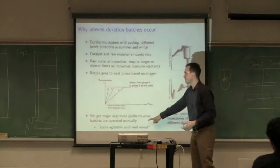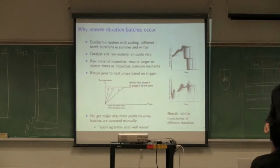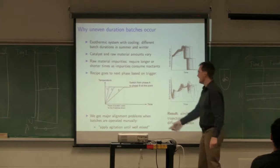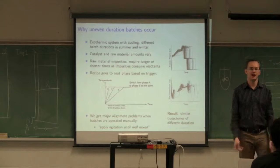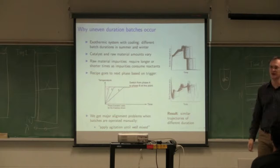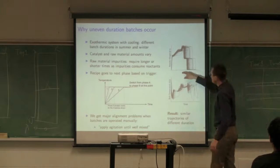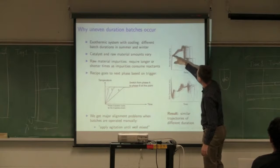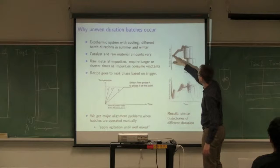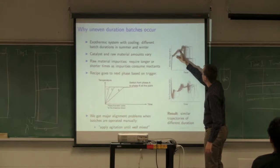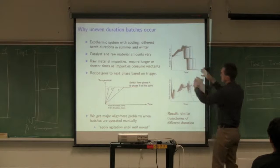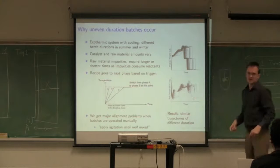When operators charge catalysts and raw materials to these units, they're never perfect. So those raw material amounts will change, and the impurities in those raw materials affect reaction time. The other thing is many times these recipes to go from one phase to the next are based on triggers, not always time-based. For example, let the batch evolve until the temperature hits a certain value, then switch to phase two.